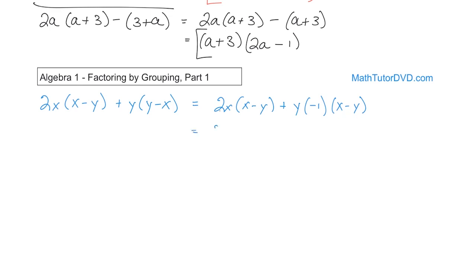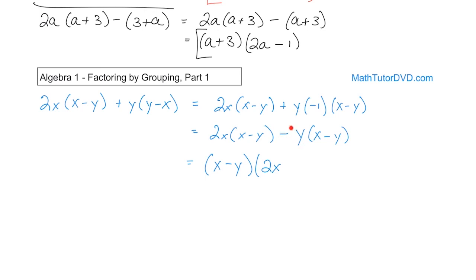To clarify: I have 2x times x minus y, then minus y times x minus y — because the negative one just becomes a subtraction. Now I have x minus y and x minus y as the common grouped term. I pull out x minus y, and what's left over from the first term is 2x, and from the second term is negative y. So the answer is x minus y times the quantity 2x minus y.